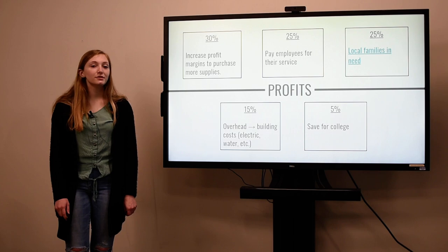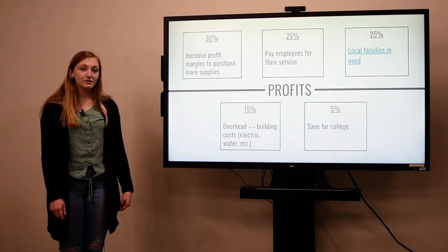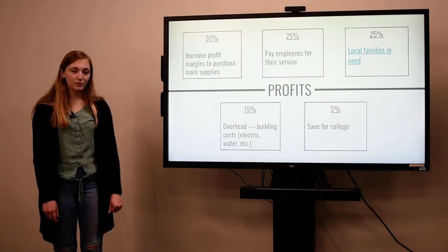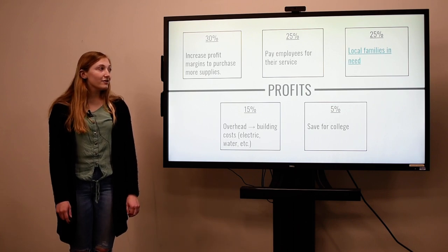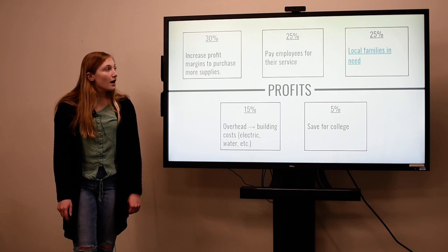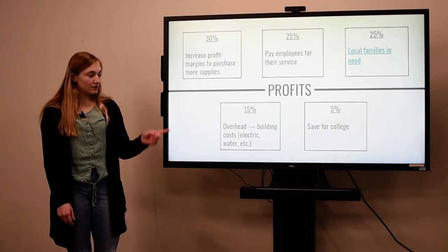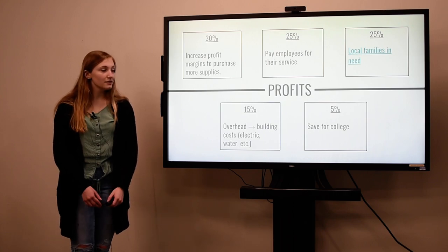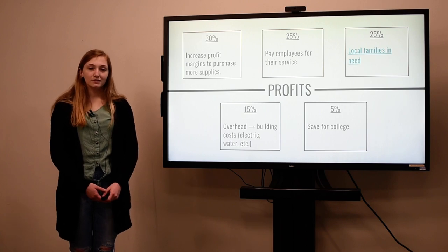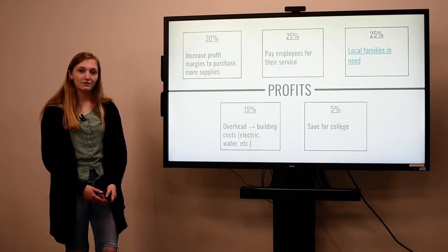So with the profits, I would use about 30% to increase profit margins to purchase more supplies to build more prototypes. 25% I would use to pay employees for their service. 25% I would donate to local families in need, which there's a link right there where you can see different families in need locally. 15% would go to overhead which is costs of the building and stuff like that. And then the remaining 5% I would save for college.